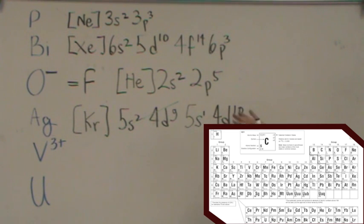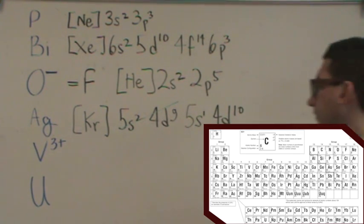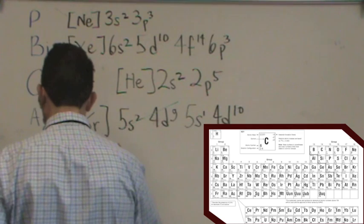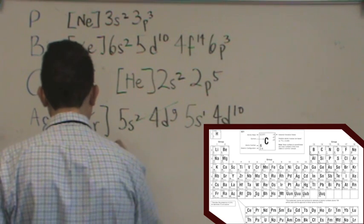Now, of course, there's exceptions to the exceptions that we're not going to learn, but this is one of the exceptions that you need to know for our class. Okay. Next, let's try vanadium 3+. All right. Let's do it first for vanadium neutral. Vanadium neutral would be, let's see, the previous noble gas is argon.